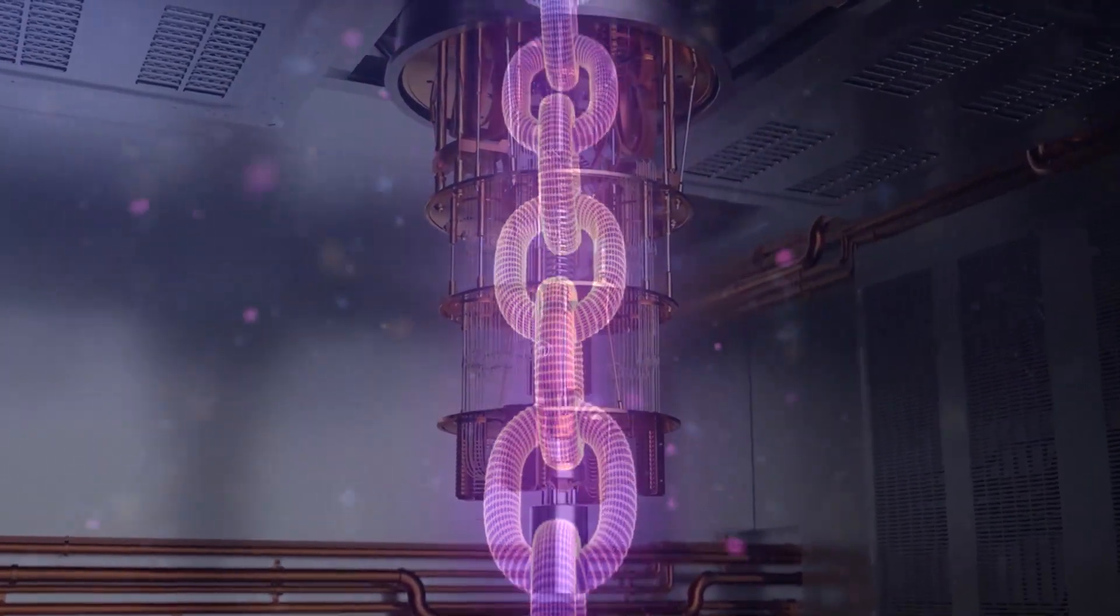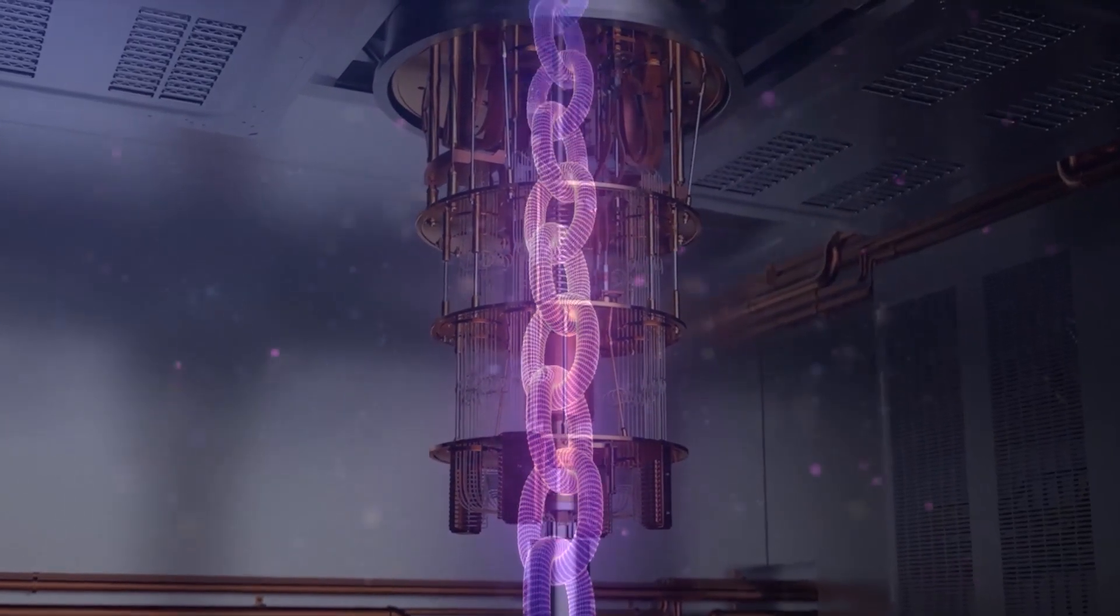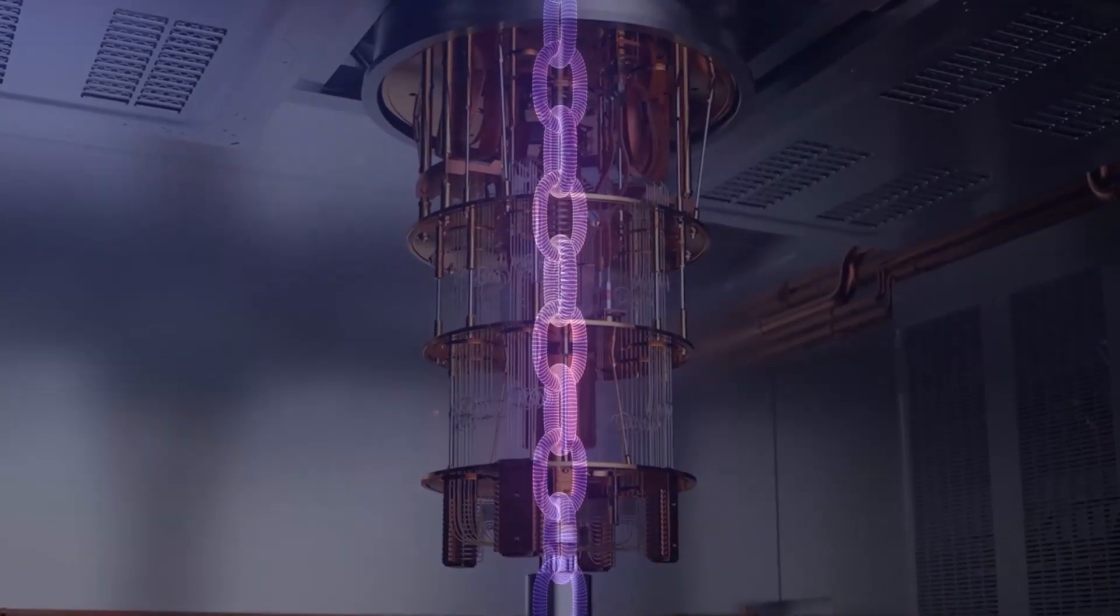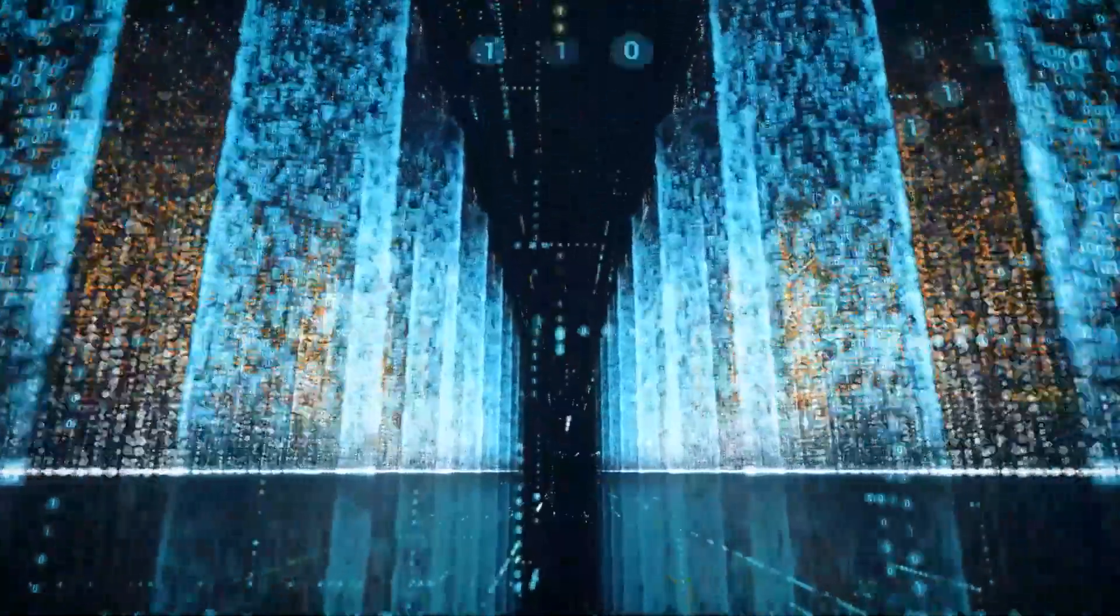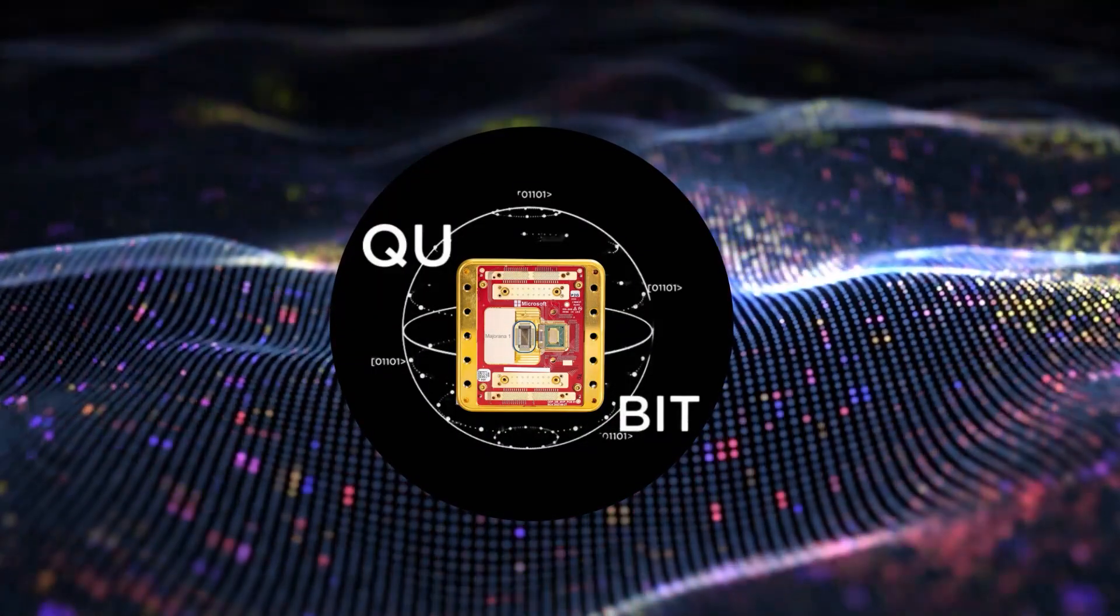Imagine tying a knot in a rope. No matter how much you shake, stretch, or bend the rope, the knot itself stays intact. The only way to undo it is to cut it. That's how Microsoft's Majorana-based qubits work.